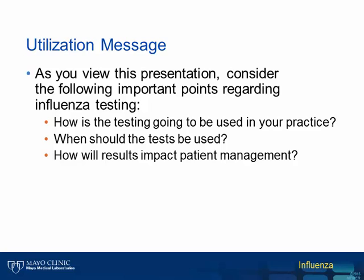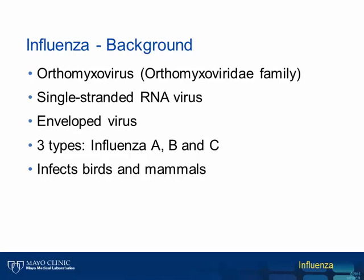Influenza is one of the most significant viral pathogens worldwide. Influenza is an orthomyxovirus that has a single-stranded RNA genome. It is an envelope virus, meaning the outside layer is composed of lipids and proteins derived from the host cell. There are three main types: influenza A, which causes the most clinically significant disease; influenza B, which is also a human pathogen but typically causes less severe disease; and influenza C, which is a much less common cause of disease in humans. These viruses can infect both birds and mammals and tend to be associated with a seasonal pattern of disease outbreaks in temperate regions.